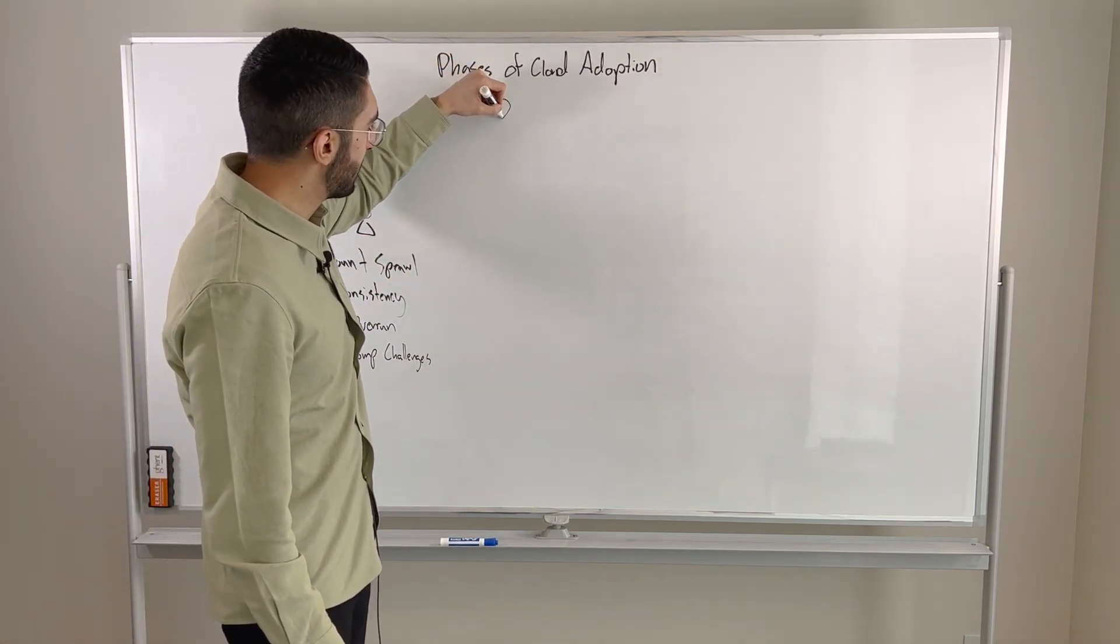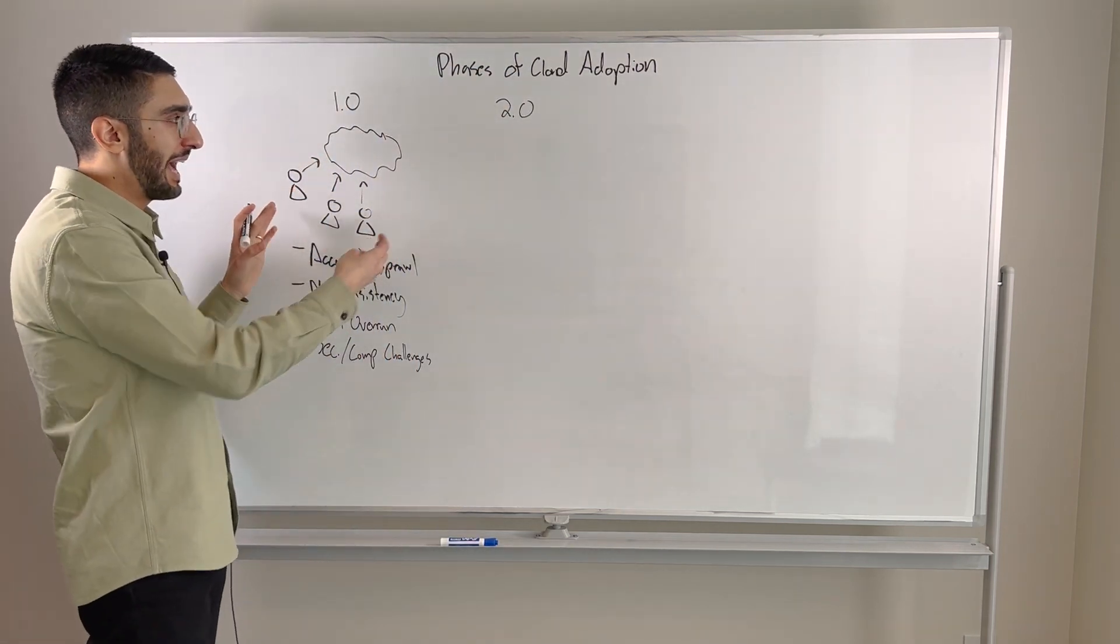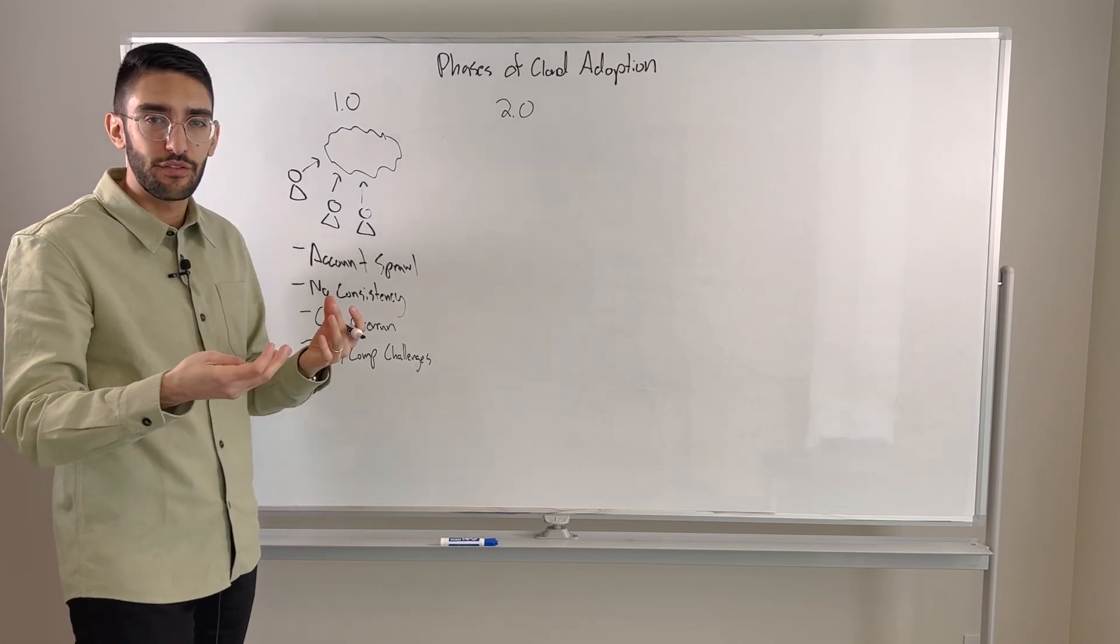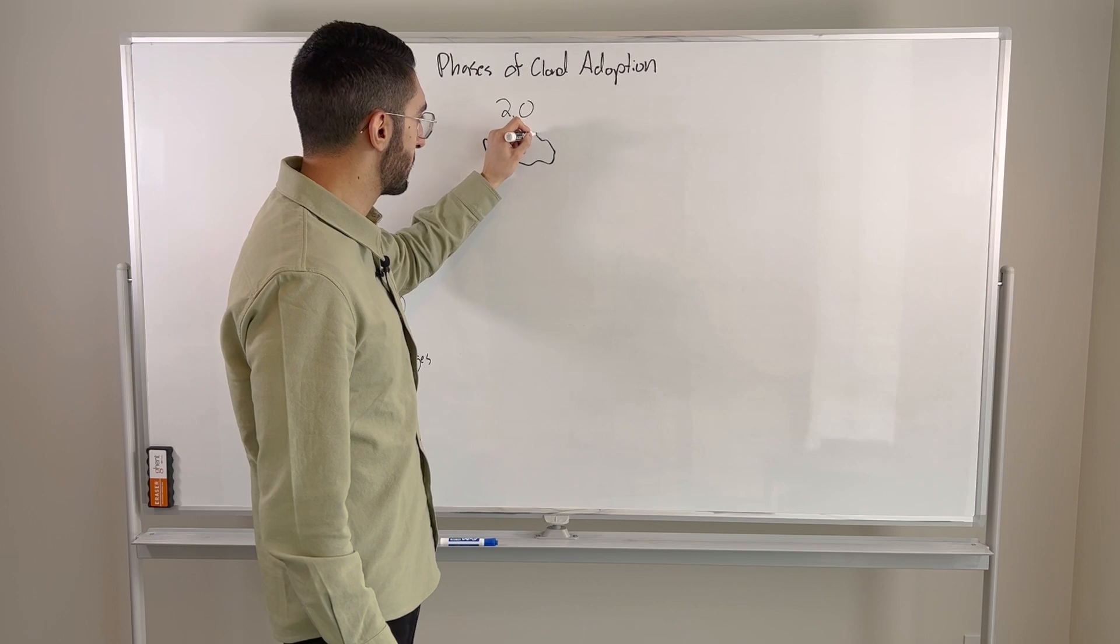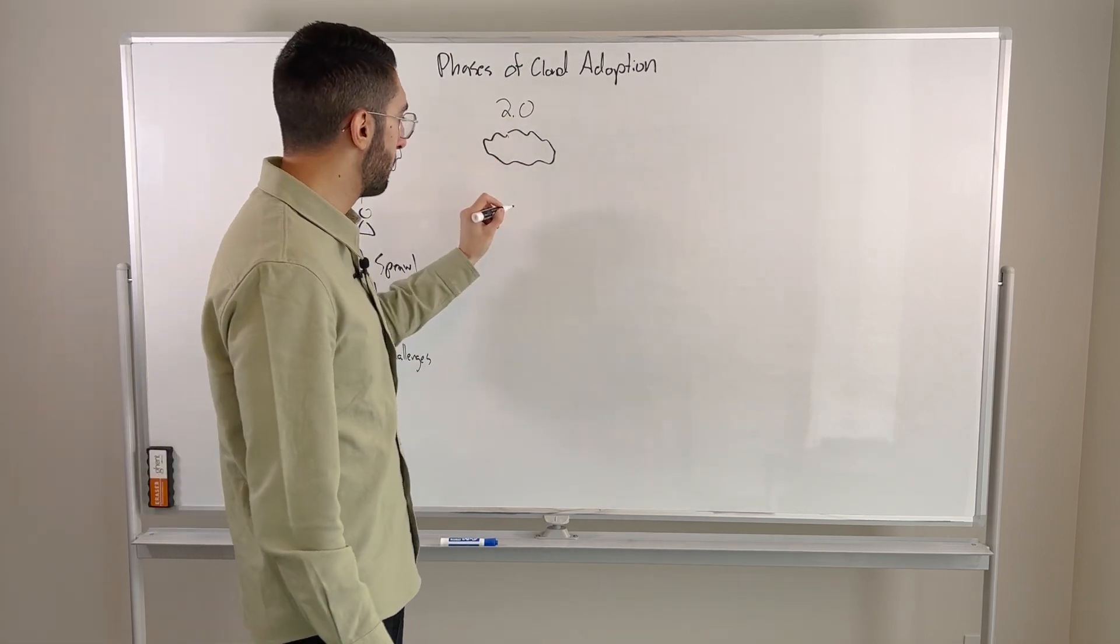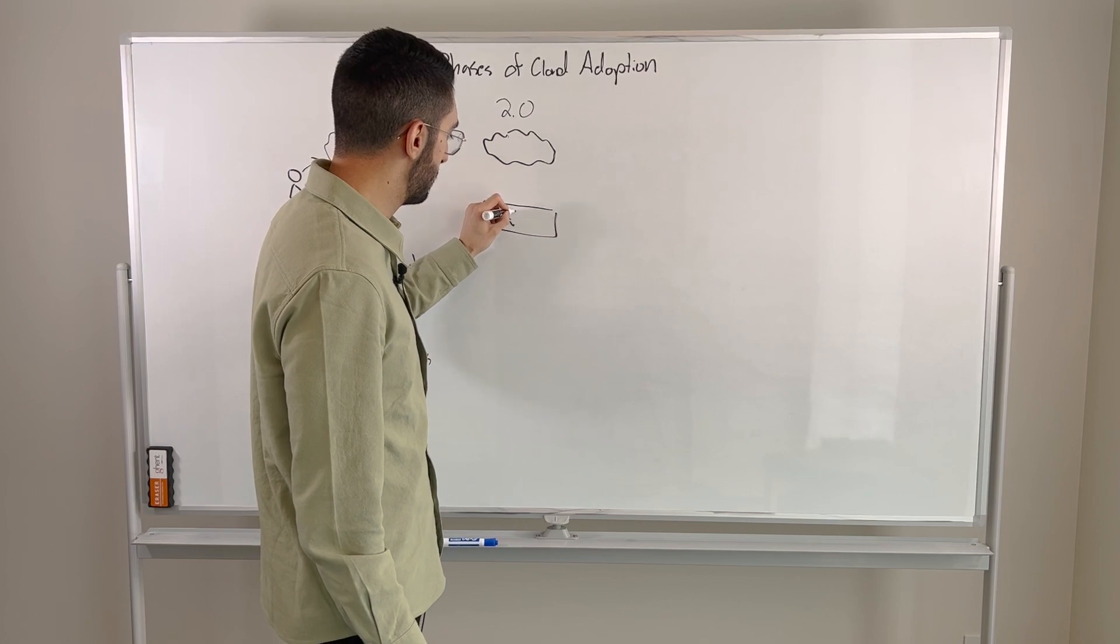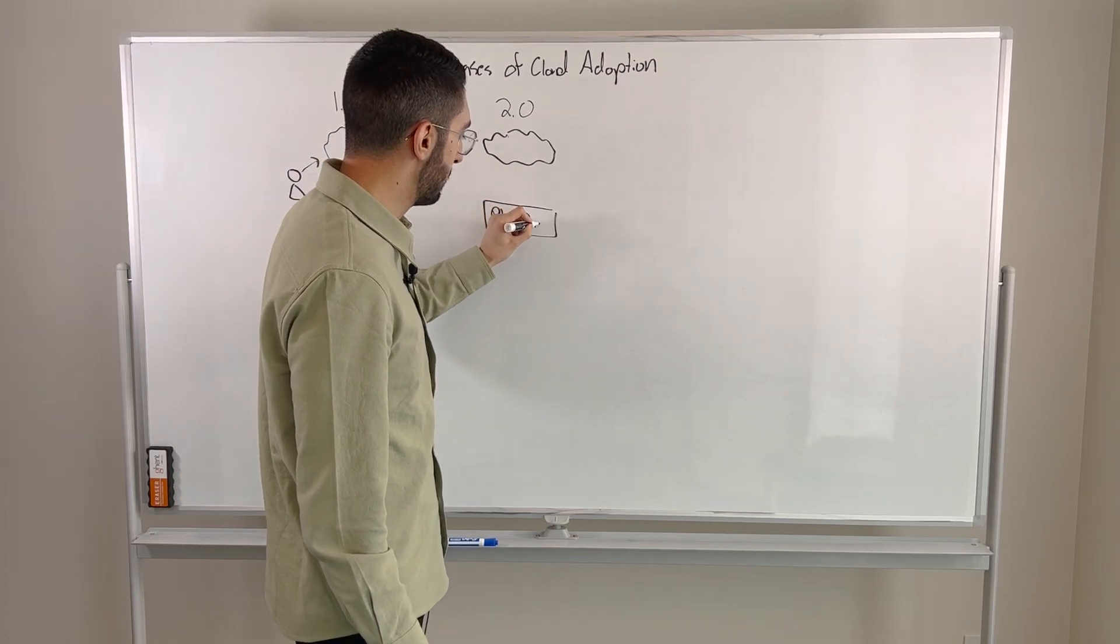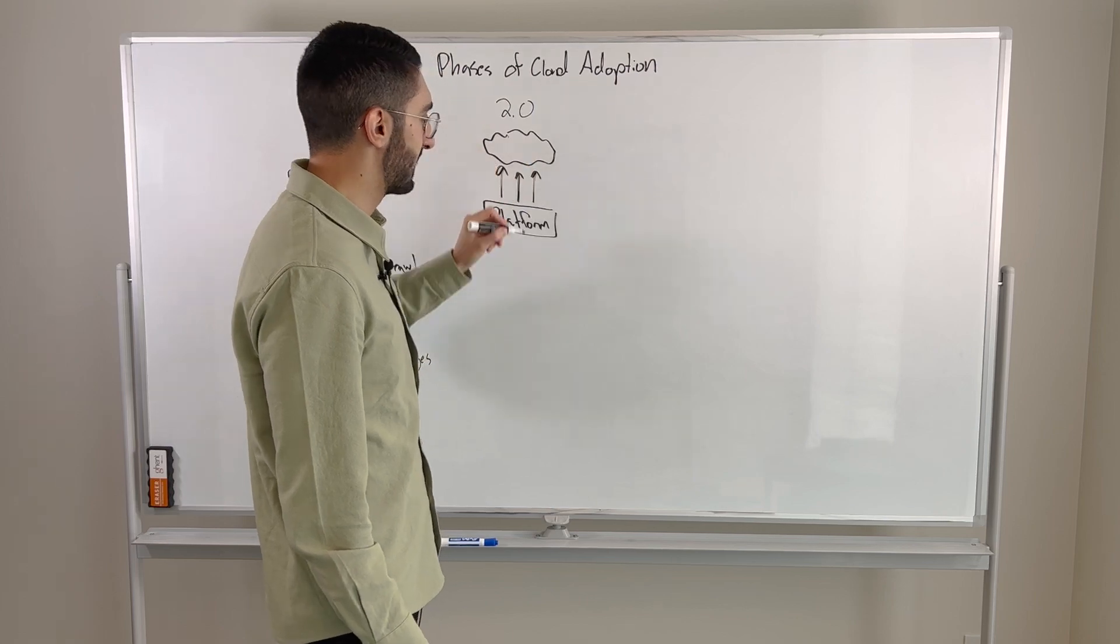So this often gets to what we call a 2.0 notion of thinking about the cloud, which is rather than just let every application team directly interface and do whatever they want, it's how do we be slightly more measured and say, we still want to enable cloud, but we want to put a consistent platform layer in place.